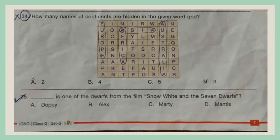Question 34. How many names of continents are hidden in the given word grid? A. 2, B. 4, C. 5, D. 3.